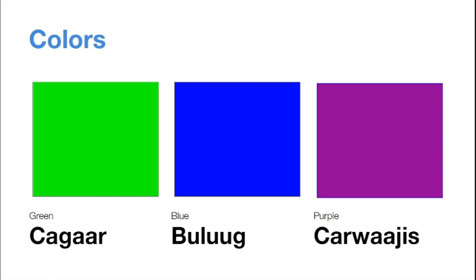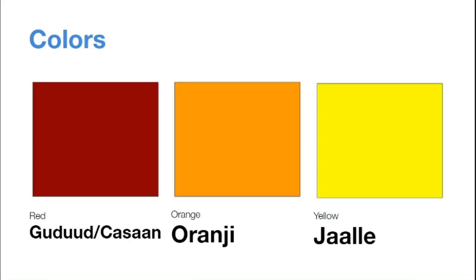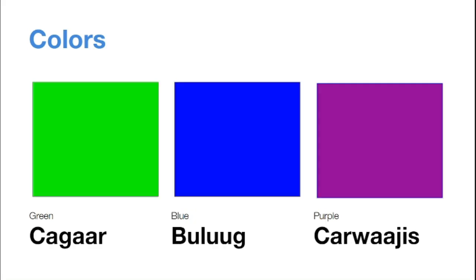Alright, so let's repeat them again — the first six colors. We have Gudud, Asan. We have Oranji. We have Jale. We have Agar. Bulug. And Arwajis.